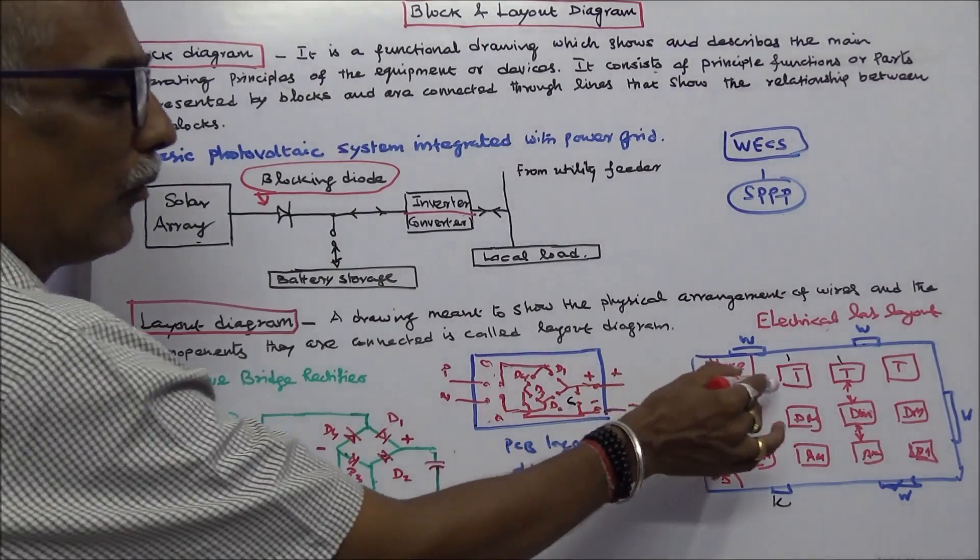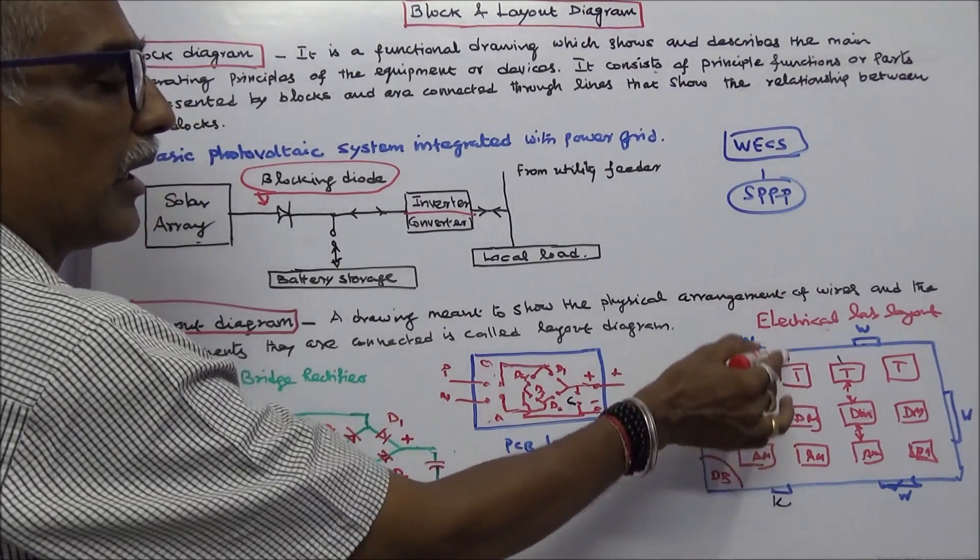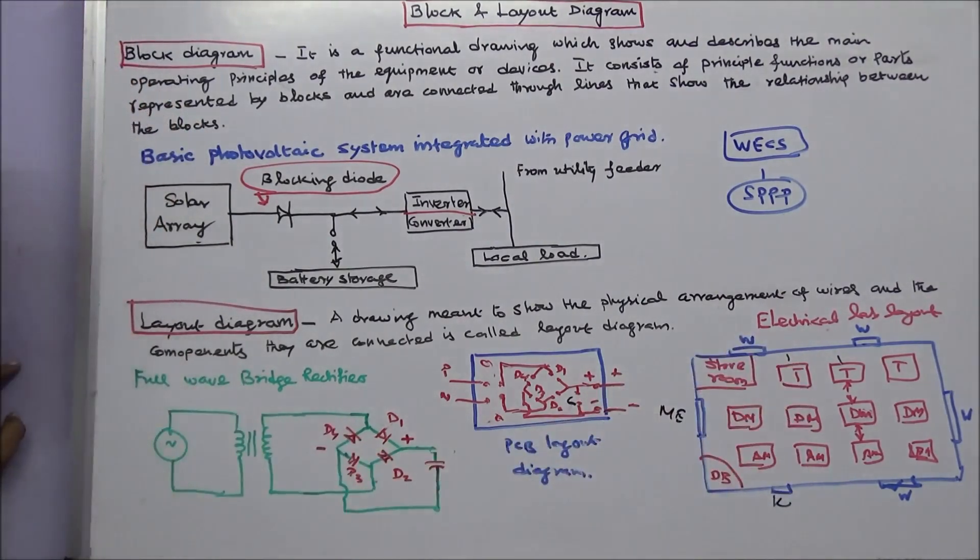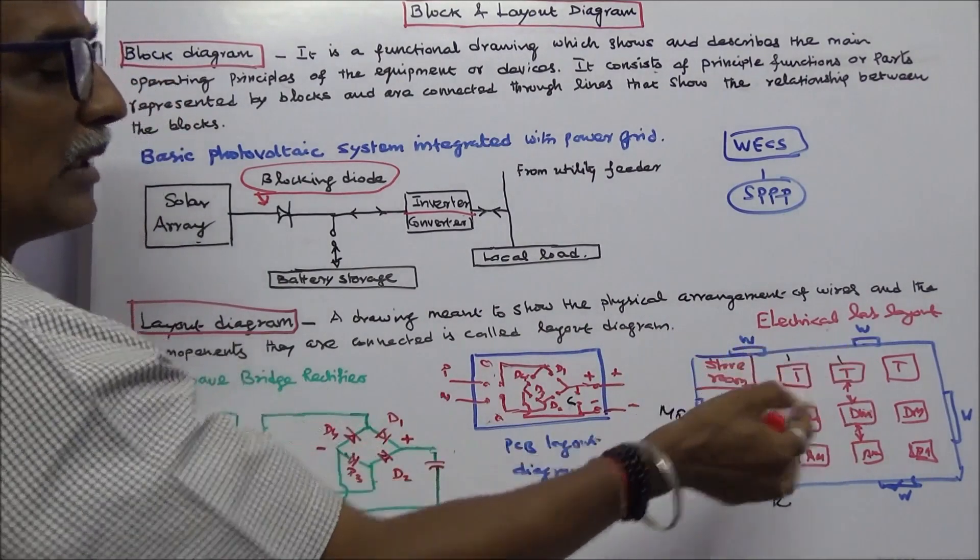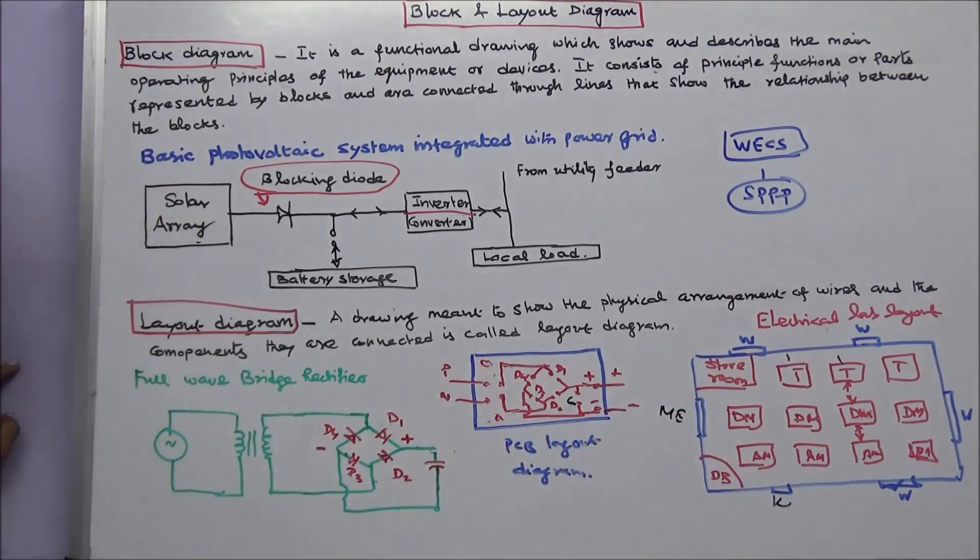So I have to show what is the distance between these two here, what is the distance, everything I have to mark. This is called the electrical lab layout. So the physical arrangement of where I am going to arrange transformers and DC motors and AC motors. So this is the basic difference between block diagram and layout diagram. Thanks for listening.